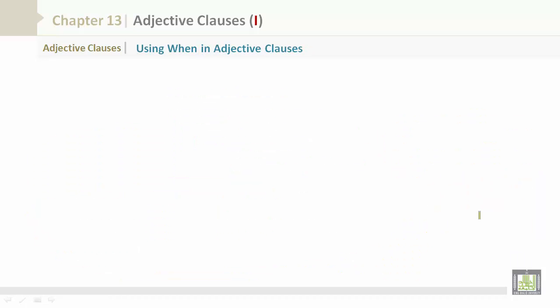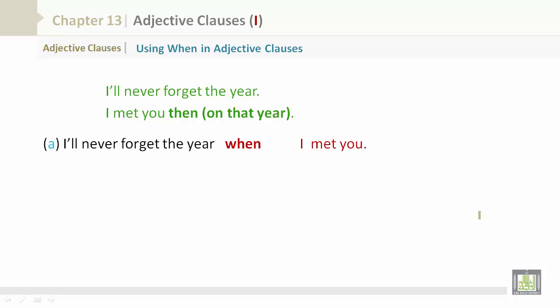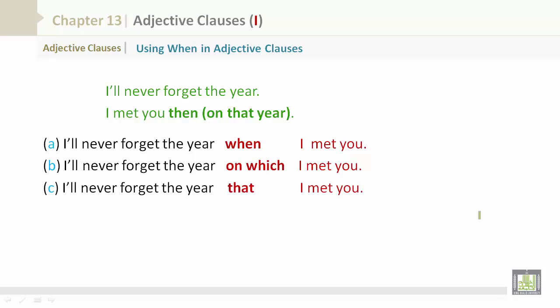Using when in adjective clauses. I'll never forget that year. I met you then, on that year. I'll never forget the year when I met you. I'll never forget the year on which I met you. I'll never forget the year that I met you. I'll never forget the year I met you.